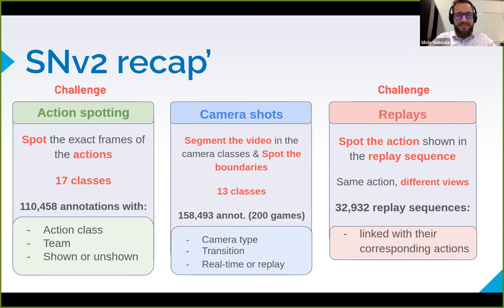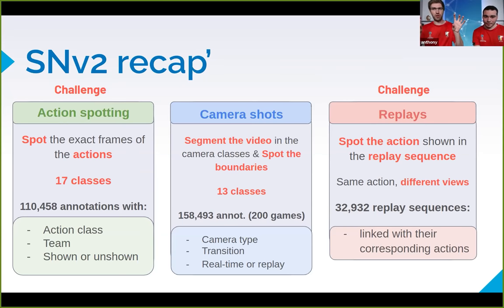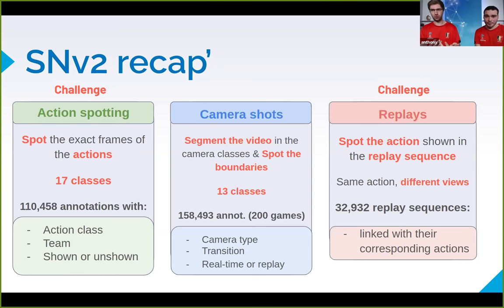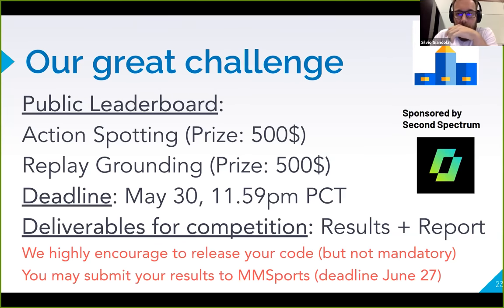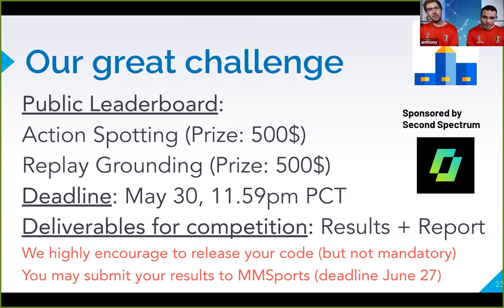As a recap: three tasks — action spotting, camera shots, and replay grounding — with action spotting and replay grounding in the challenge. There is a public leaderboard on EvalAI and a prize of $500 for each task, sponsored by Second Spectrum. They are sometimes looking for talented computer vision scientists, so winning or developing an interesting method could also be an opportunity to work with them.